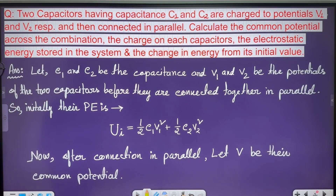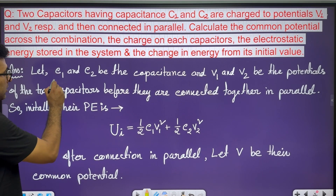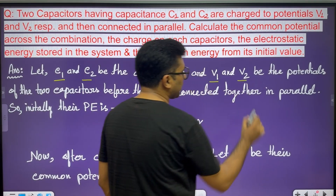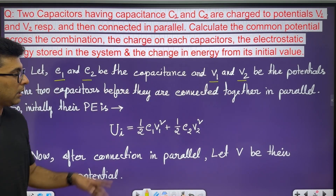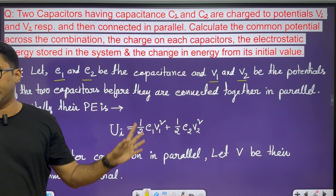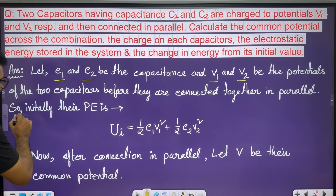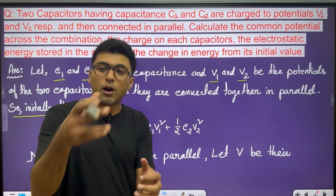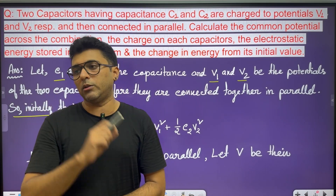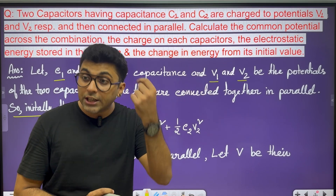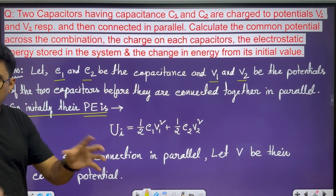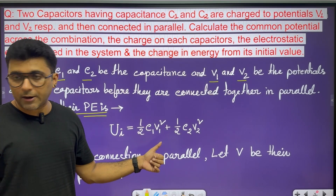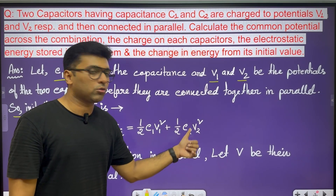Let C1 and C2 be the capacitors, and V1 and V2 be the potentials of the two capacitors before they are connected together in parallel. Initially, their total potential energy Ui equals half C1 V1 squared plus half C2 V2 squared.